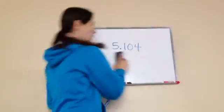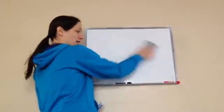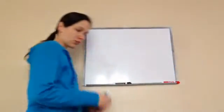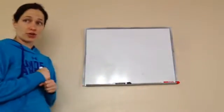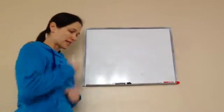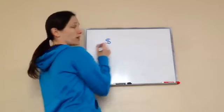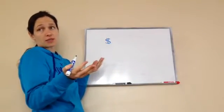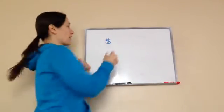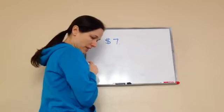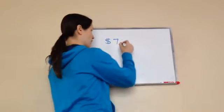Okay, fifth grade, lesson 104. This one is on rounding decimal numbers to the nearest whole number. Let's take a decimal number, and we'll use money for right now because money is still a decimal number. We'll look at other decimal numbers in a minute, but let's do money first.